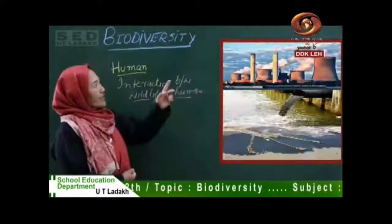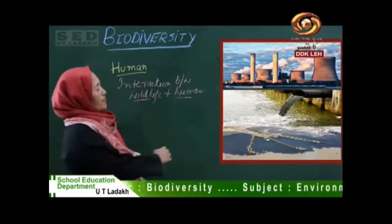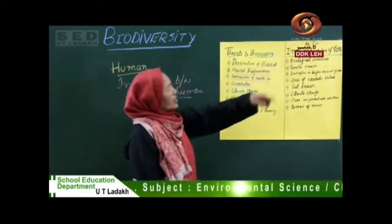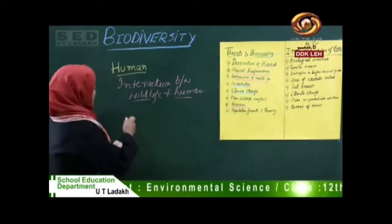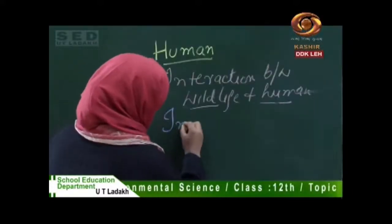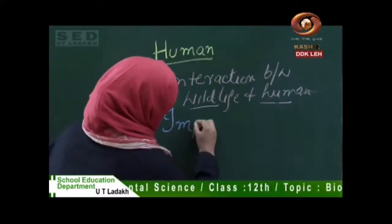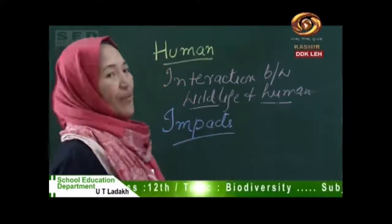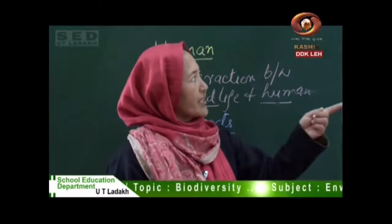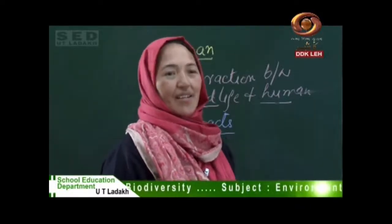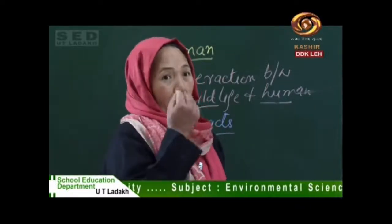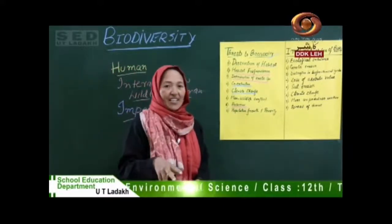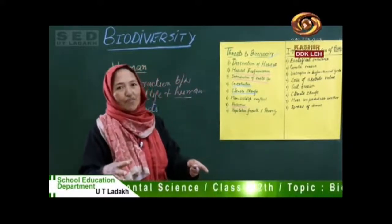This is how we complete the threats to biodiversity. The second point is the impact of the loss of biodiversity. What happens when there's a threat to biodiversity? The first impact is ecological imbalance — if any single organism is missing from the chain, it disturbs the ecological system.